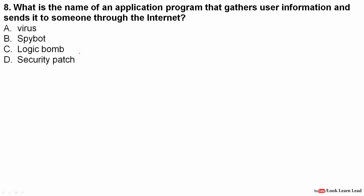Next question: what is the name of an application program that gathers user information and sends it to someone through the internet? Since it gathers user information and sends it — a type of spying — the answer is a spy bot. It is an application program.